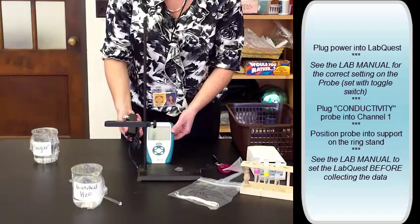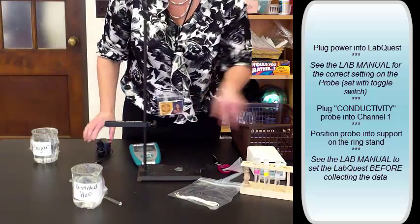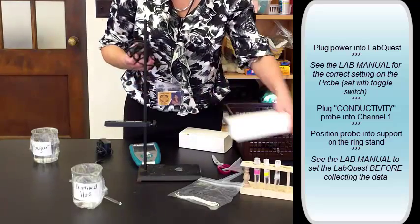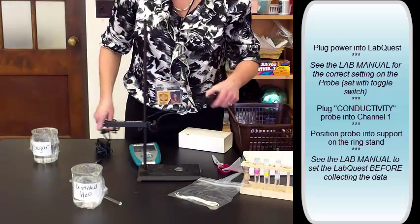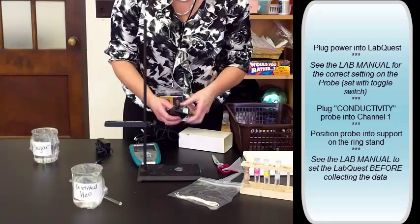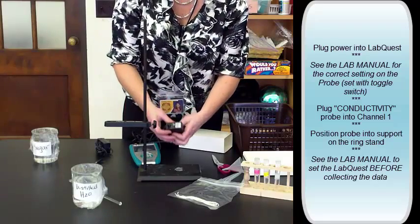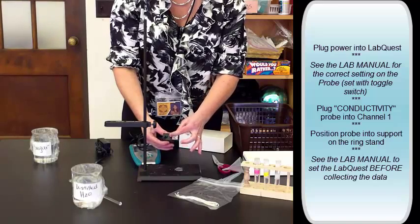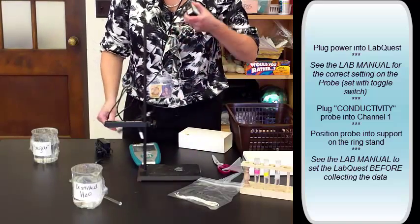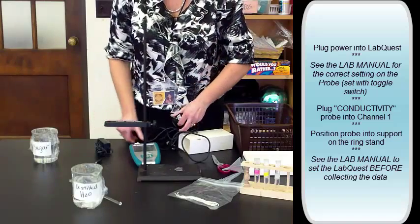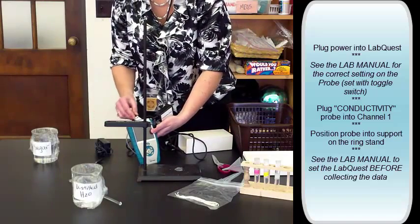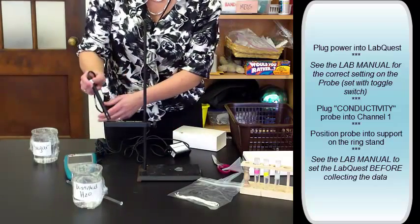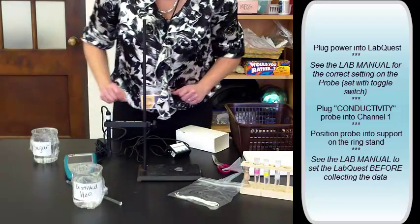You'll plug in the LabQuest like you've done before for power. Now the conductivity probe, there's an extra setting, and it's all in the box that goes between the power and the probe. So look in the lab manual so you know which one to set it on. This toggle switch gets moved a lot. So we're going to plug into channel one, and put the probe in the support, and then we're set up.